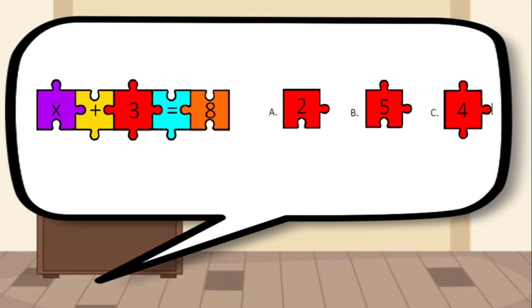Solving a linear equation in one variable is like solving a puzzle. Look at the given figure and think which of the puzzle pieces on the right will make the numerical sentence on the left true. The puzzle piece that will make the numerical sentence true is B. It is the only puzzle piece that will fit, and 5 is the only number that will make x plus 3 equals 8 true. This is how we solve linear equations in one variable.